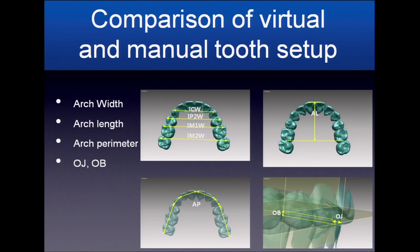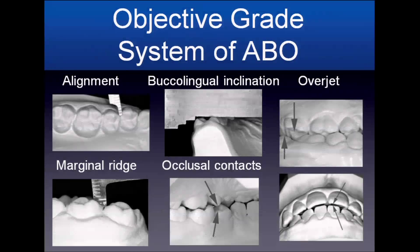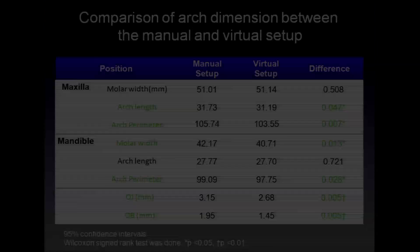We measured arch width, length, perimeter, over-jet, and over-bite as linear values, and tip, torque, and rotation of individual teeth as angular values. Finally, we used the American Board of Orthodontics grading system for the objective evaluation of the two setup methods.